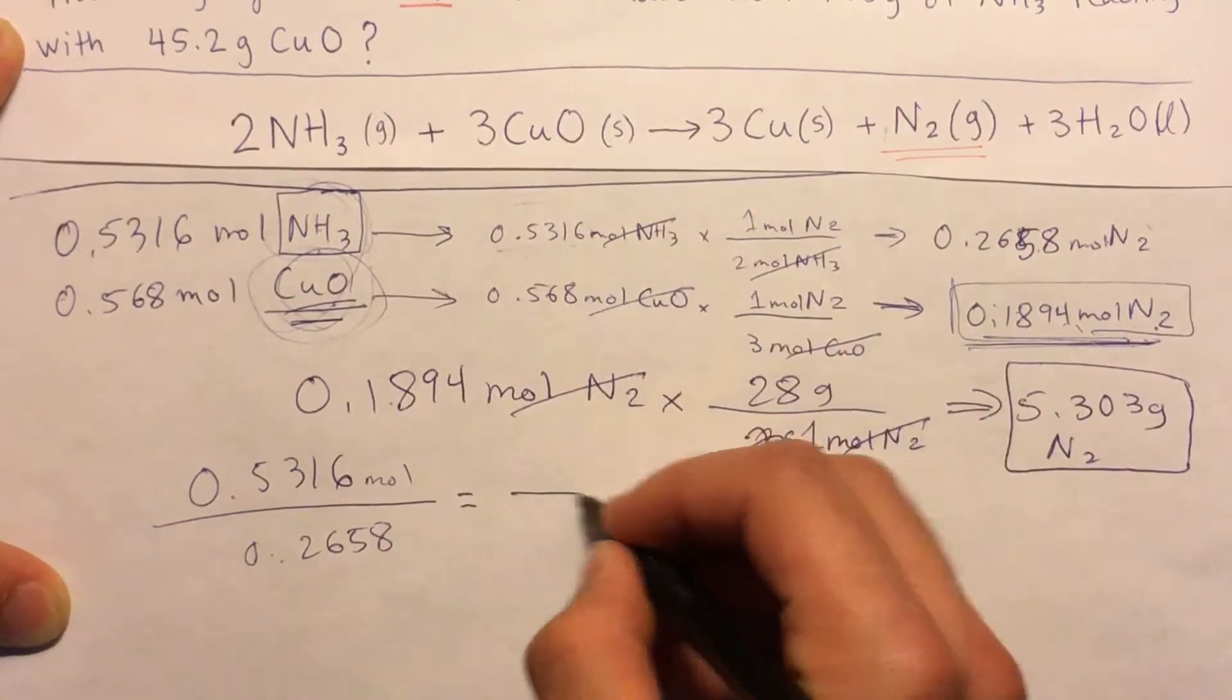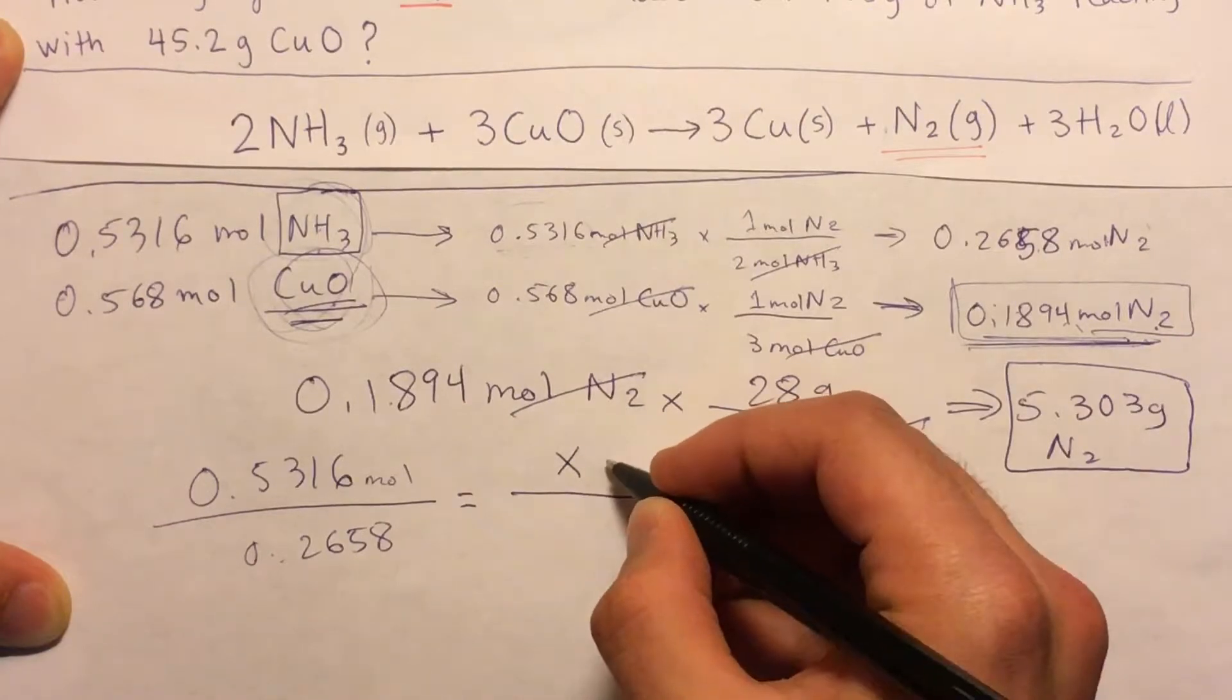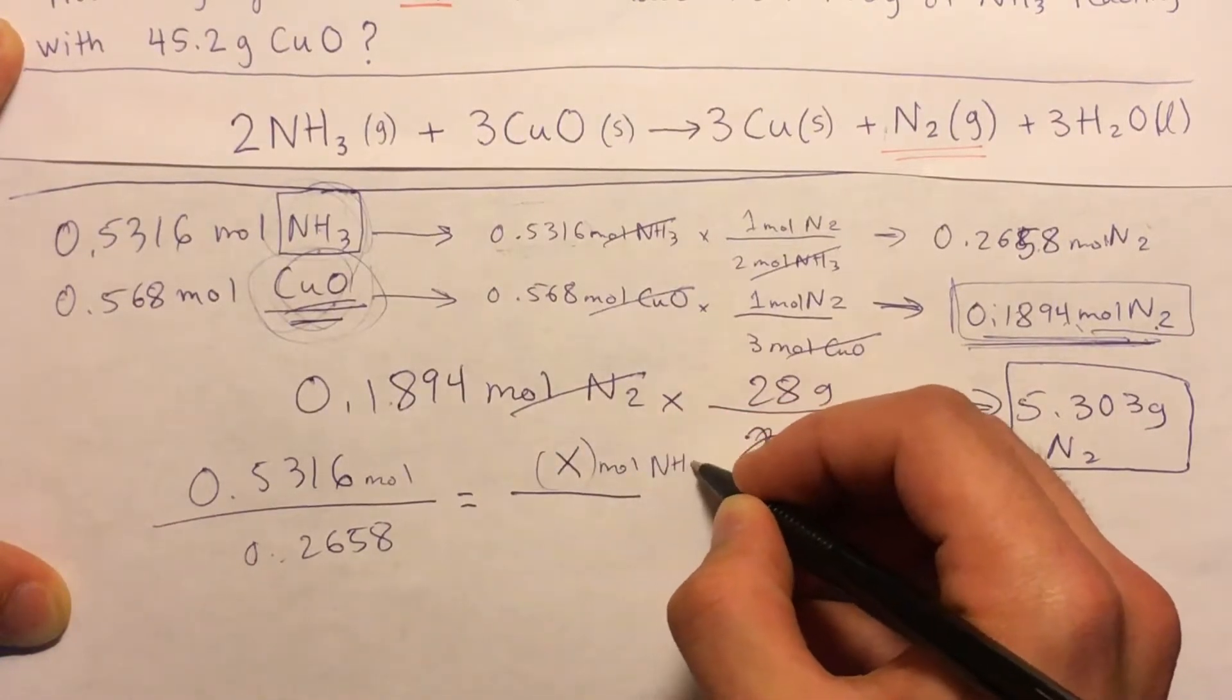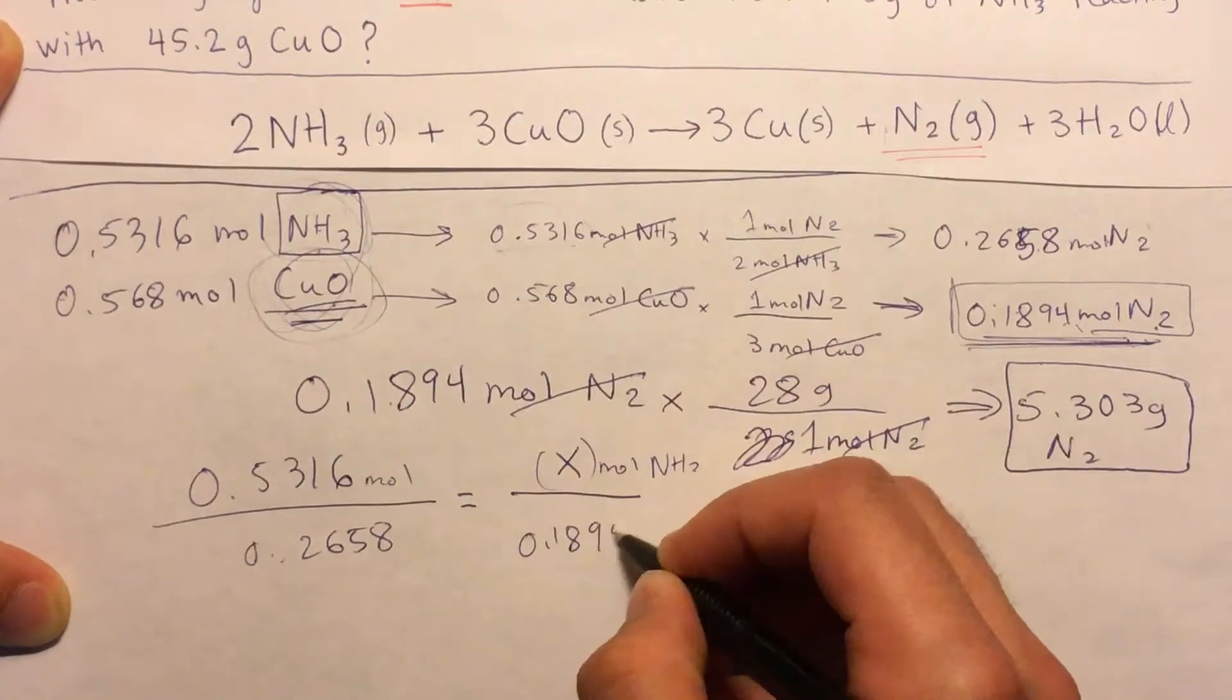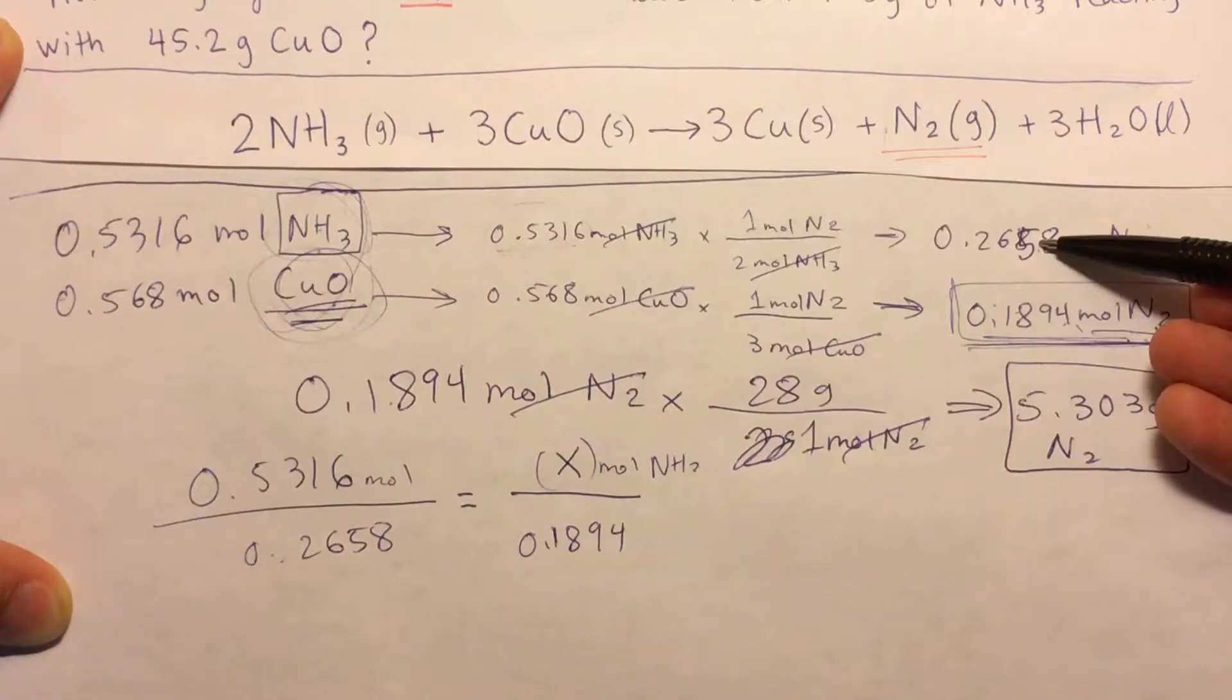And that would be equal to what number needed of NH3, so x moles of NH3, that produce 0.1894. Because we want this number to be 0.1894.